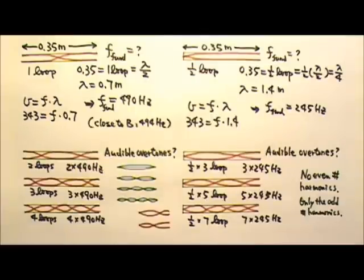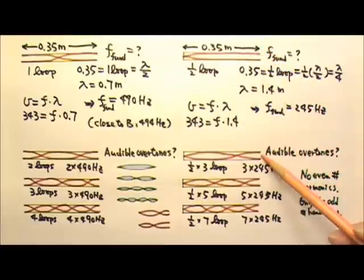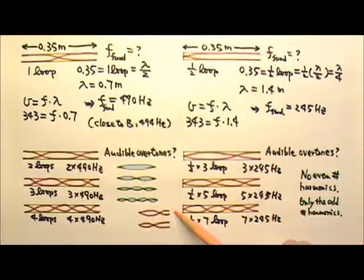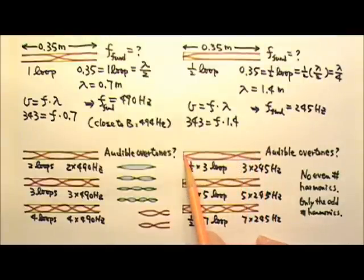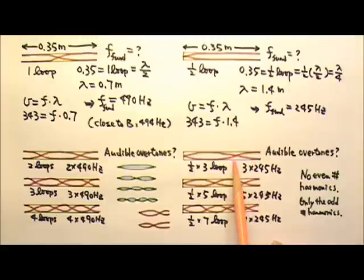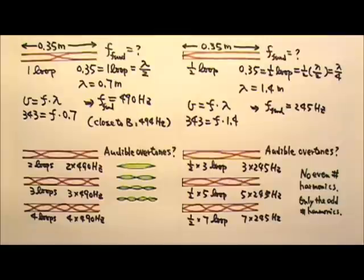In case you are asked to draw standing waves on a test, please try to make anti-nodes open widely — do not make them close together. Also, a half loop is half as long as a whole loop, so try to make a half loop look like it is half as long as a whole loop; do not make a half loop as long as or longer than a whole loop. If you follow the links at my website, you can see wave machine demonstrations that match these organ pipe standing waves.